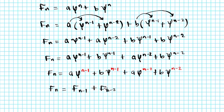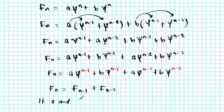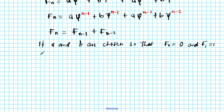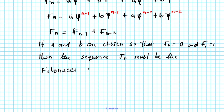If a and b are chosen so that F sub 0 equals 0 and F sub 1 equals 1, then the sequence F sub n must be the Fibonacci sequence. This is a really amazing result — to see how these two amazing numbers are connected to each other.